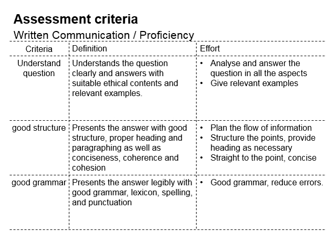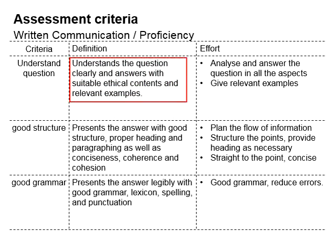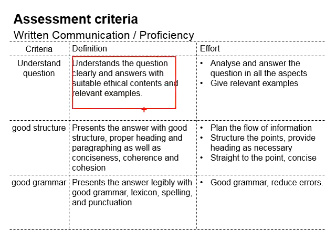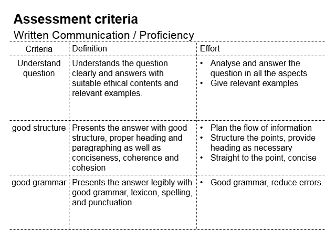The second set of assessment criteria is related to written communication or proficiency. These are the three criteria. First, understanding the question clearly and answering with suitable ethical contents and relevant examples — this is basically demonstrating you are able to understand the questions. The second criteria is to present the answer with good structure, proper headings and paragraphing, as well as conciseness, coherence, and cohesion, meaning presenting the essay and the message in a good structure.